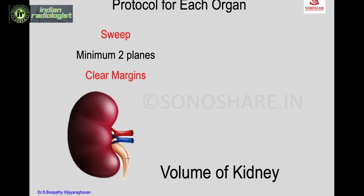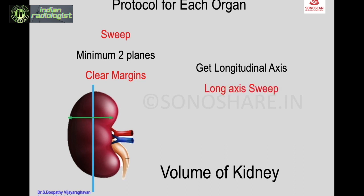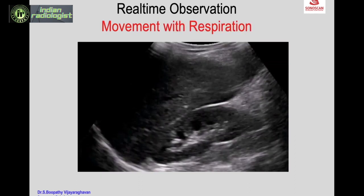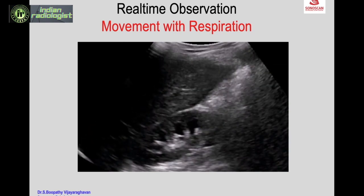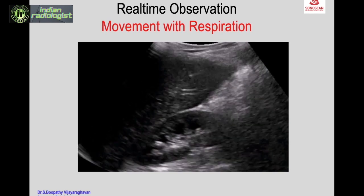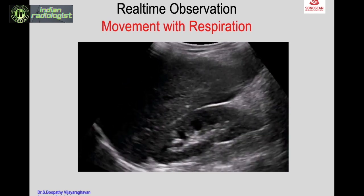The protocol for the kidney should cover a sweep of minimum two planes to cover the entire volume. First get the long axis, make a long axis sweep from side to side, then rotate 90 degrees to the short axis and move up and down to cover the entire volume. At least two planes must be covered.